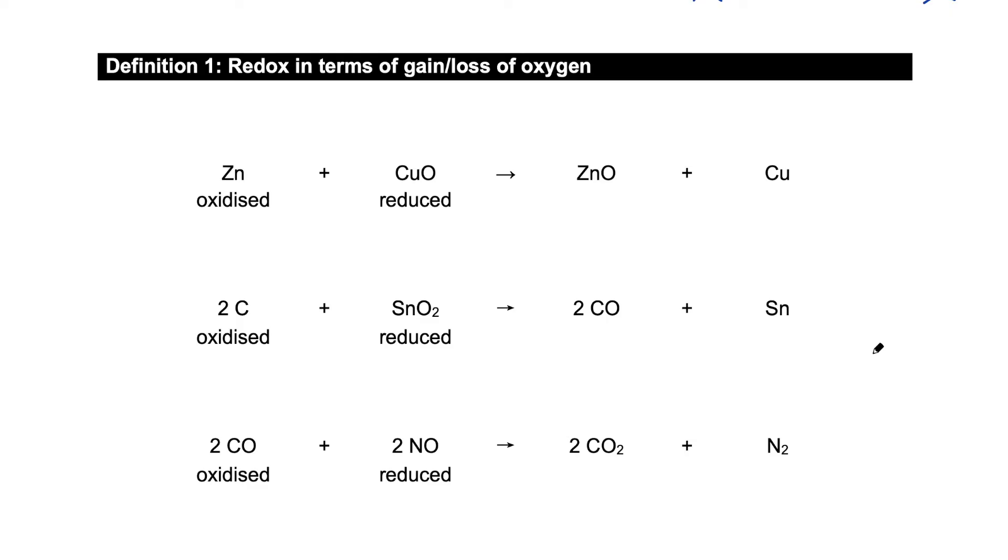So here I have three different chemical reactions and I have listed the substances that are being oxidized and the substances that are being reduced. So from zinc becoming zinc oxide, from carbon becoming carbon monoxide and from carbon monoxide becoming carbon dioxide. All three of them are being oxidized in this reaction. So based on this, can you come up with a definition of oxidation?